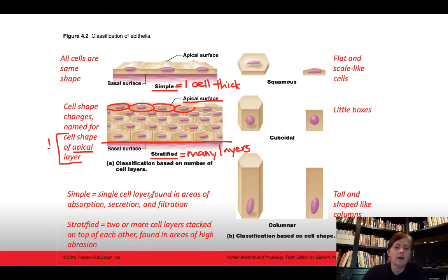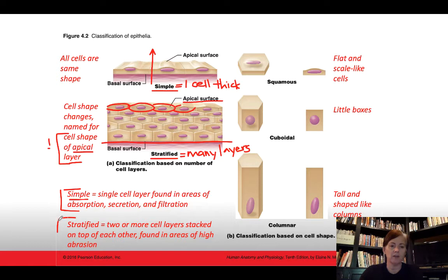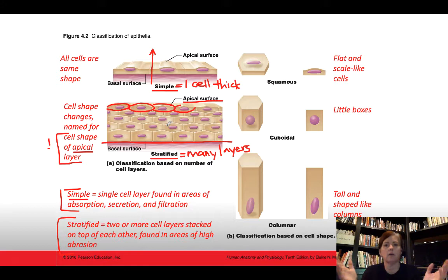Simple epithelium — one cell layer thick — is found in areas of absorption, secretion, or filtration, where substances need to cross through the cell. It doesn't offer much protection, but it allows substances to move across it easily, like diffusion of oxygen and carbon dioxide. Stratified epithelium, with its many layers, is found in areas of abrasion — your skin would be stratified epithelium because we constantly hit it on things and need that extra protection.